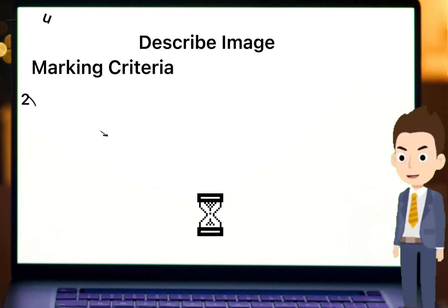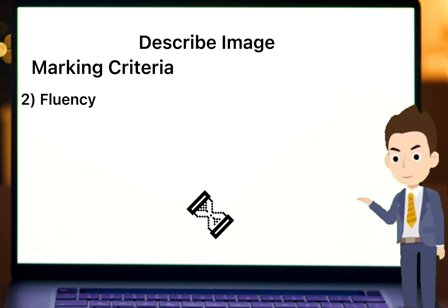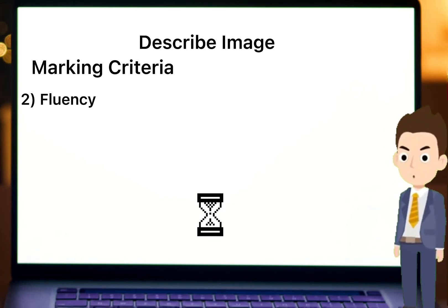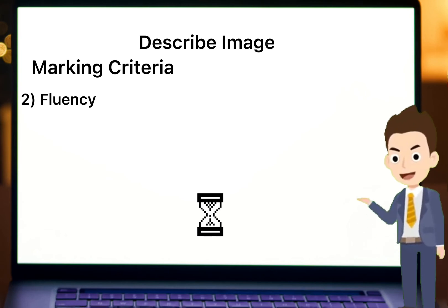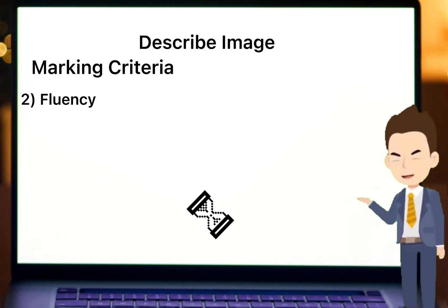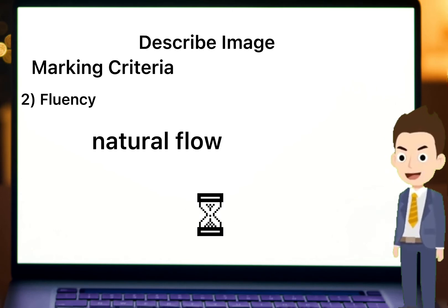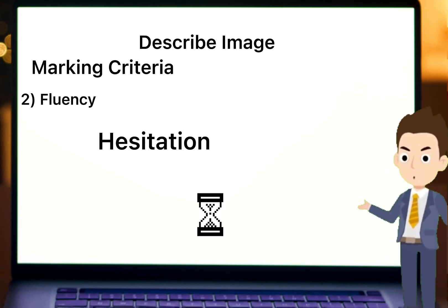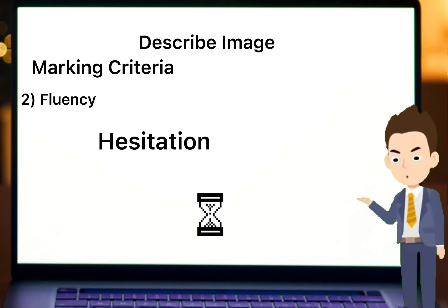Dusre number pe fluency hai. PTE check karta hai ke description mein fluency hai ya nahi. Description smooth hai, effortless hai. Aur description mein natural flow hai ya nahi. Agar description mein hesitation hai aur flow nahi hai, ya description mein repetition zyada hai, marks affect honge.